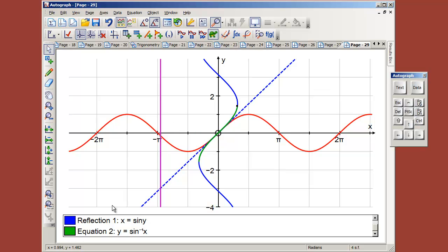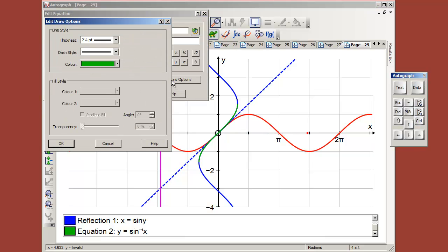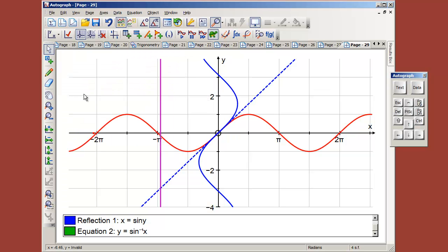Now, it's not very easy to see that, so I'm going to double-click on this and draw options and make it nice and fat. Personally, whenever I say sine to the minus 1 of x, I actually sort of think to myself, the angle whose sine is x. So, in fact, we have angles up this axis as well.